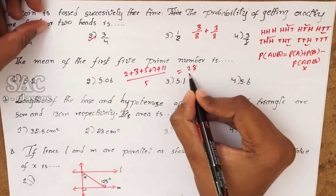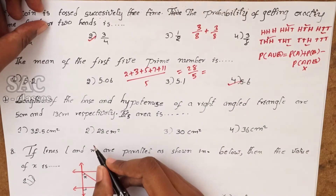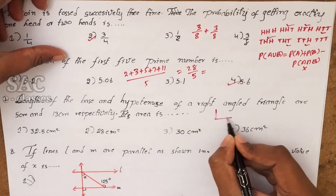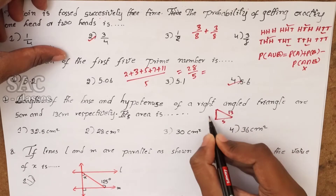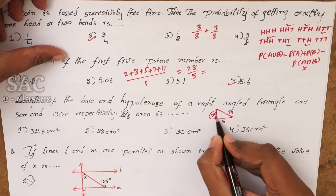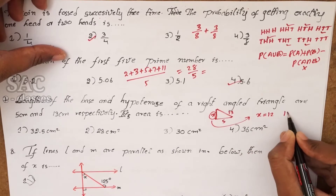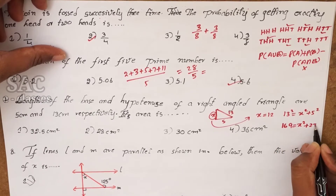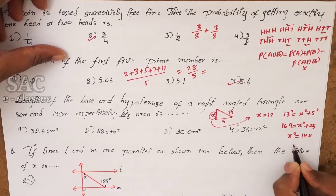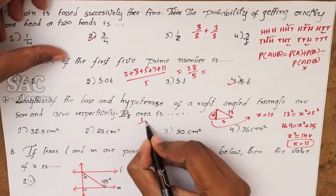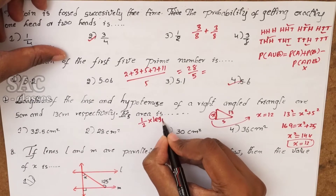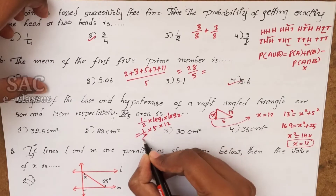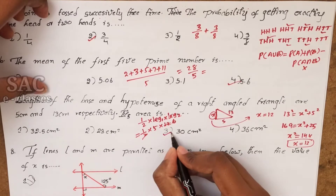That gives 28/5 = 5.6. Next: the length of the base and hypotenuse of a right-angle triangle are 5 and 13. Using Pythagoras: 13² = x² + 5², so 169 = x² + 25, giving x² = 144, x = 12. Area = ½ × leg1 × leg2 = ½ × 5 × 12 = 30 cm².